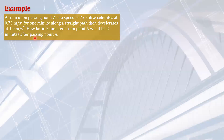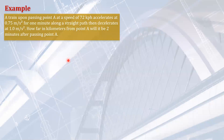Our quiz now is about dynamics. I will flash the question and then pause for a while. Then you pause the video. If you can solve it, then much better, then continue and see the solution. Okay, this is the question. A train, upon passing a point A at a speed of 72 kilometers per hour, accelerates at 0.75 meter per second squared for one minute along a straight path, then decelerates at 1 meter per second squared. How far in kilometers from point A will it be two minutes after passing point A?